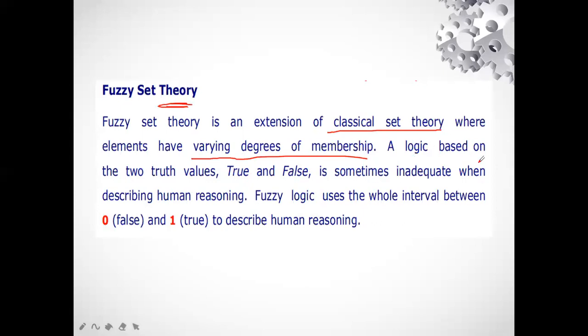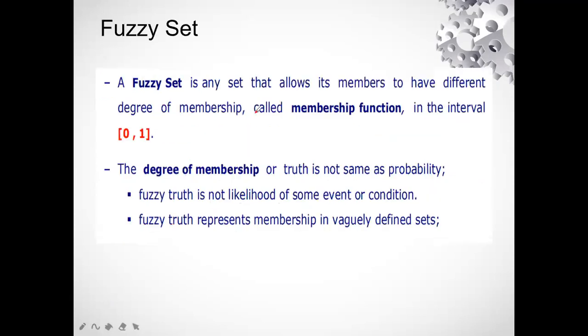A logic based on the two truth values — true and false — is sometimes inadequate for describing human reasoning. When we talk about real-world problems, the answer is not always zero or one. It is sometimes confusing; it has certain probability and certain characteristics on the basis of which we take a decision. There we use fuzzy set theory, where the degree of membership varies between zero and one.